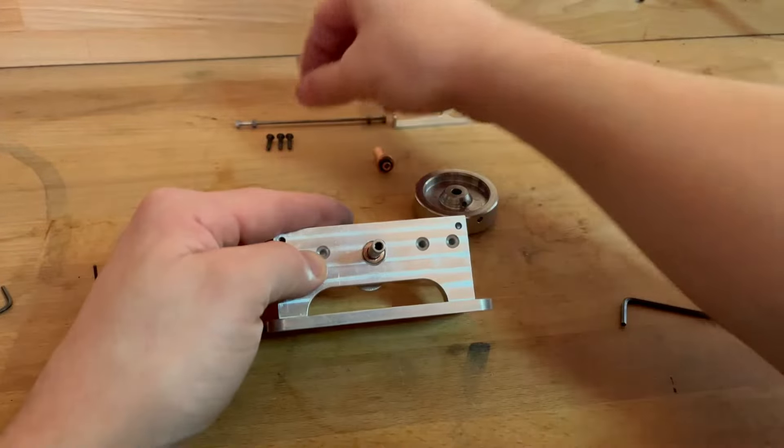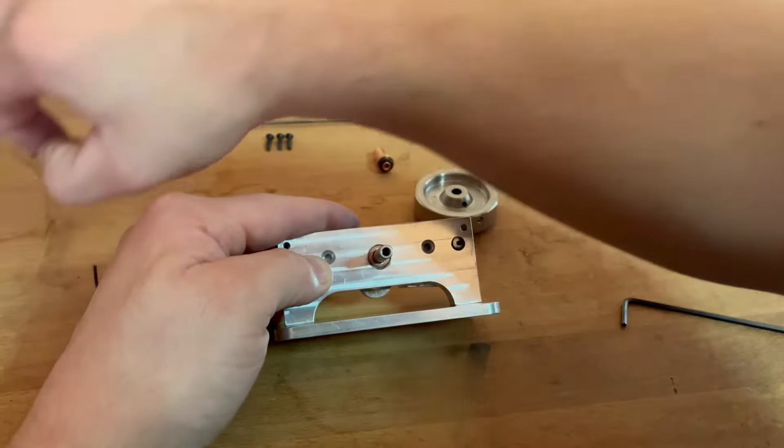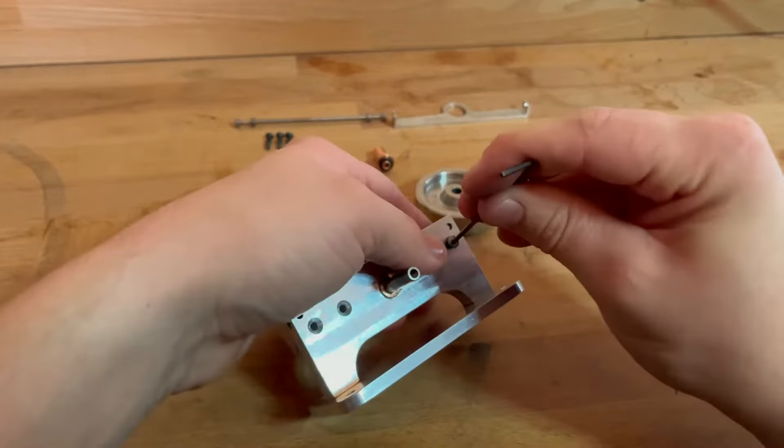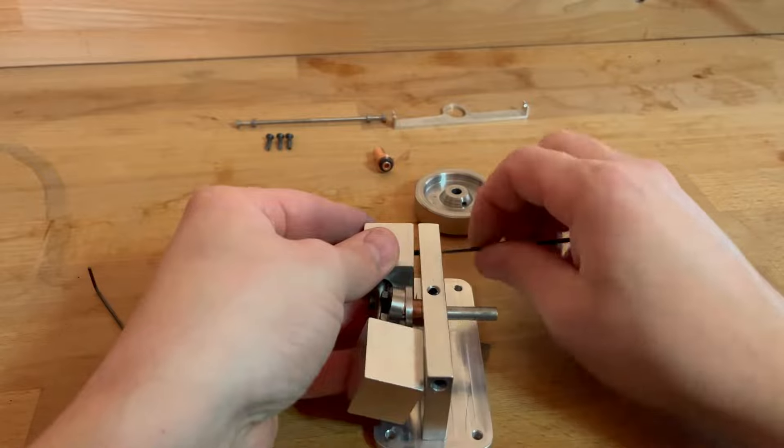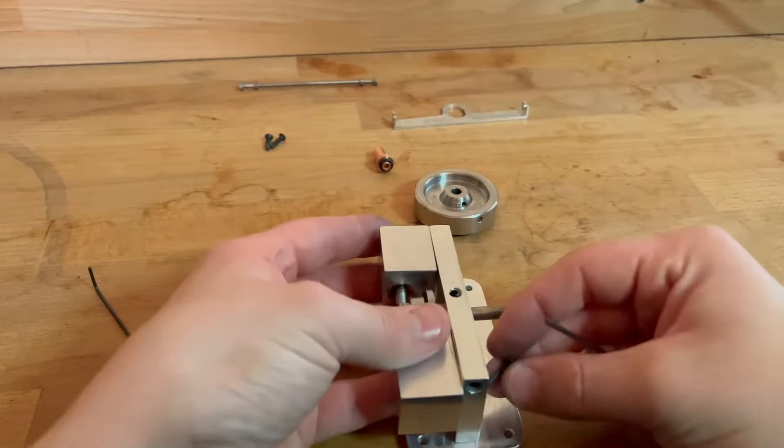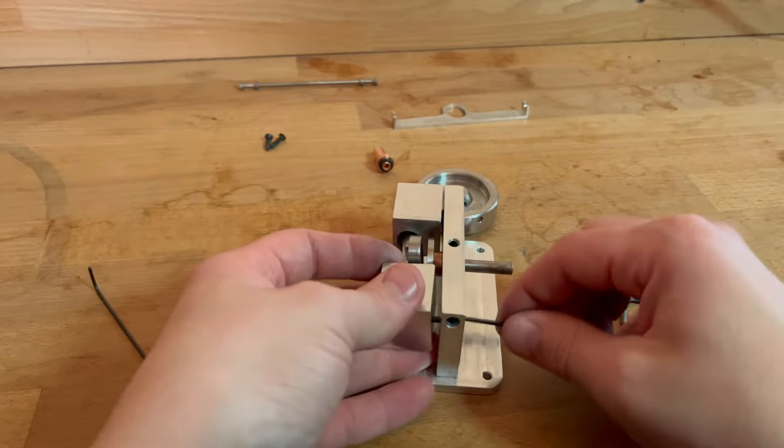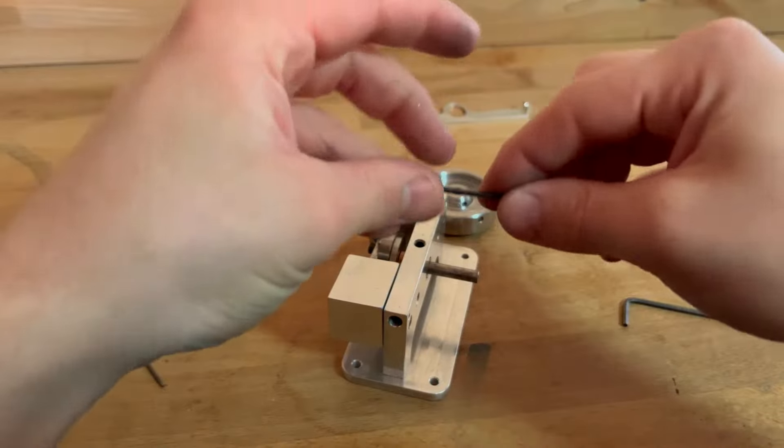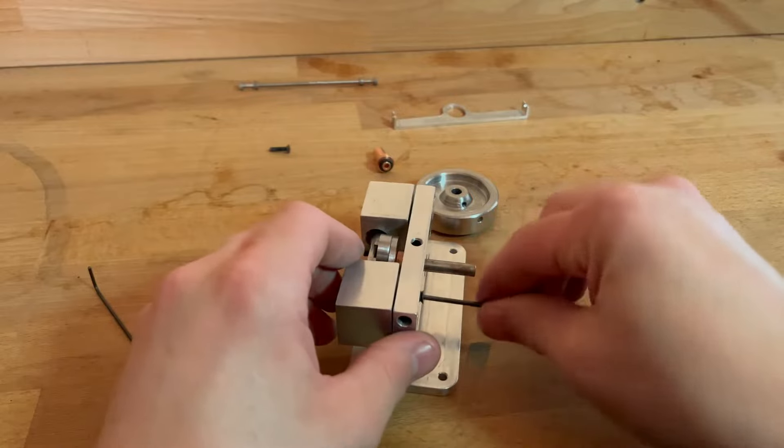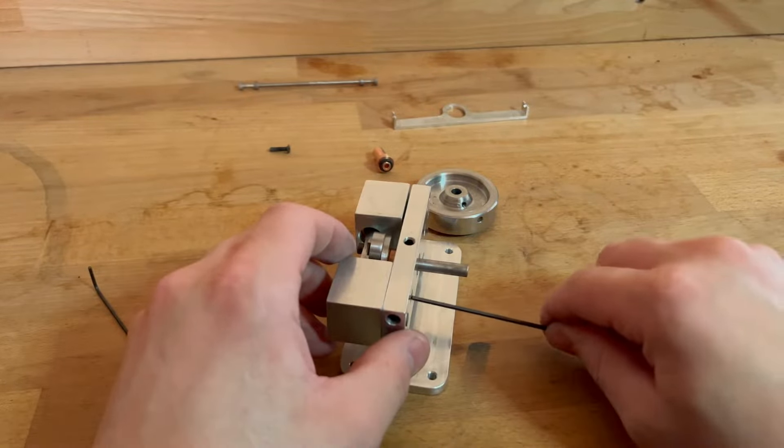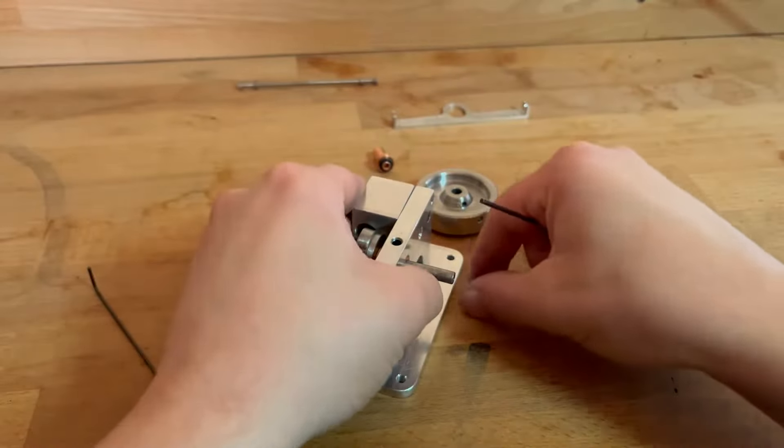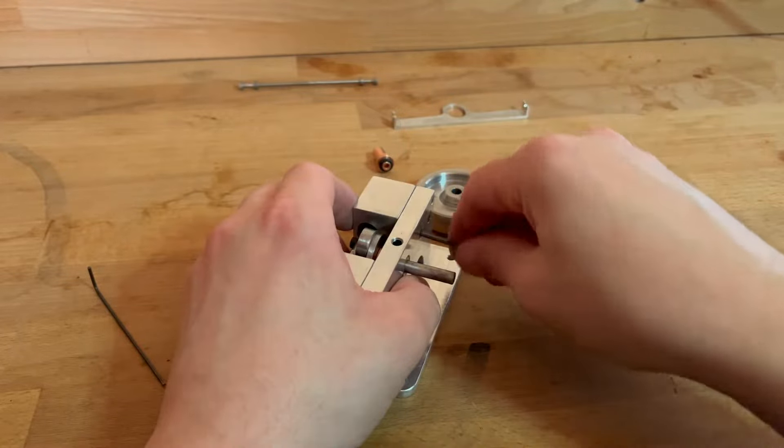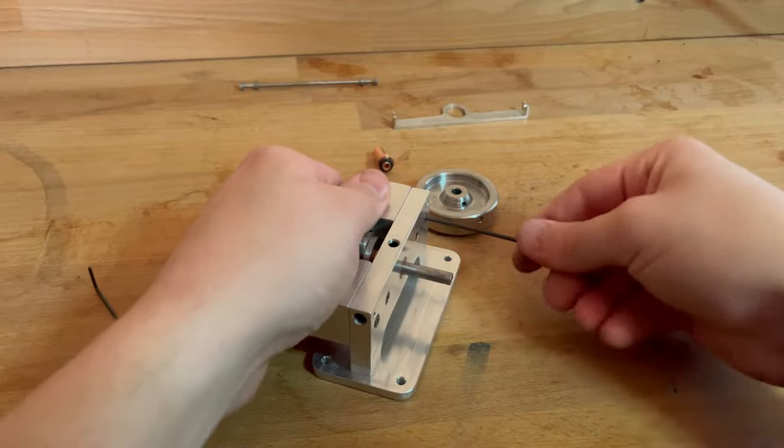We get the M3 bolts and take our two and a half mil allen key, and then we'll just nip this in like that. We're not tightening them up fully at the moment, we'll just slowly nip them, just finding the holes and nipping them all up together. So then we put the last bolt in, and we can then nip them up.